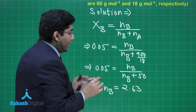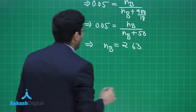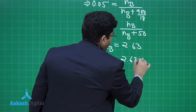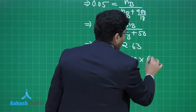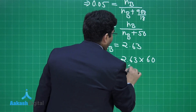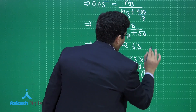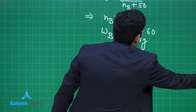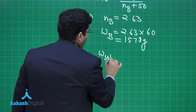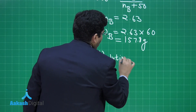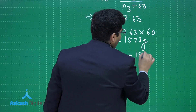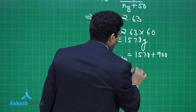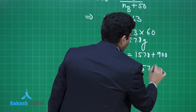The number of moles of urea is 2.63. We find the weight of urea W_B by multiplying the number of moles by its molar mass: the molar mass of urea is 60, so the weight is 157.8 grams. The weight of solution is the weight of solute (157.8 g) plus weight of solvent (900 g), giving 1057.8 grams.